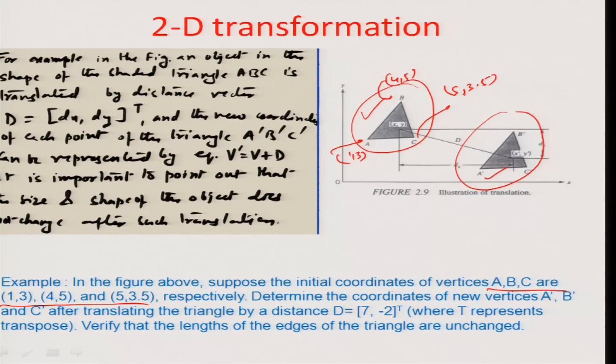You are basically translating this triangle to the position a',b',c' by a distance matrix which is actually [7,-2]^T. Obviously, it means that you can write it as a transpose matrix [7,-2] like this. The point a' as per the equation v + d = v' becomes equal to (8,1). The v for the point a becomes the location coordinate (1,3) and the distance transpose matrix becomes [7,-2]. So, this becomes (8,1) which I have written here and in a similar capacity we can write the b' as (11,3) and the c' as (12,1.5).